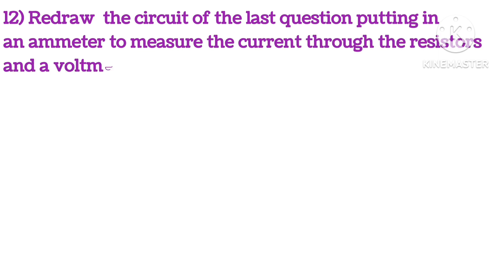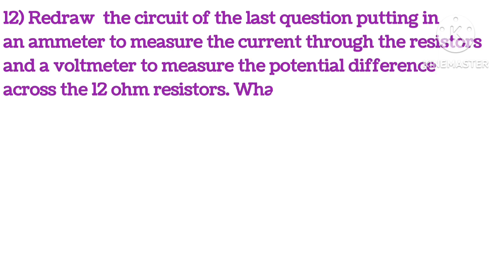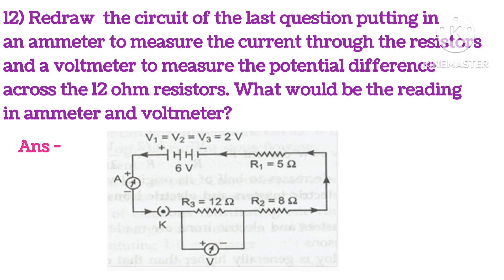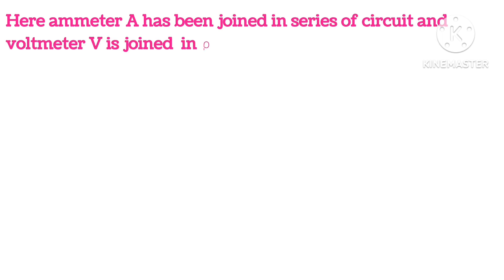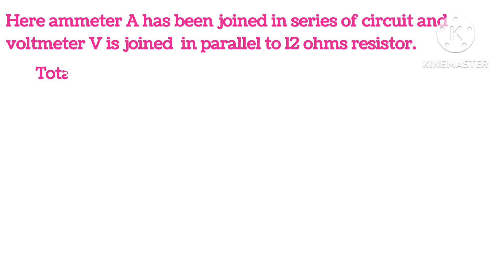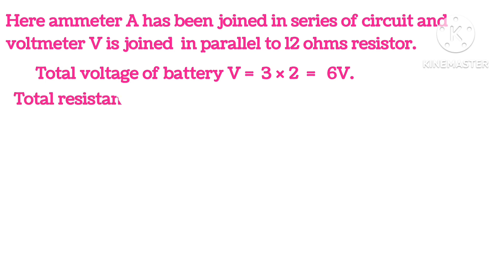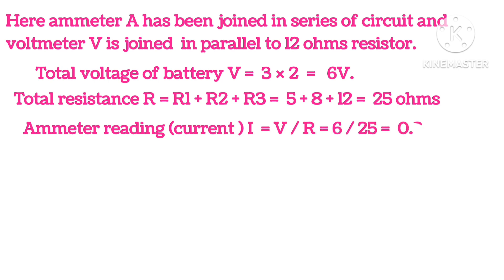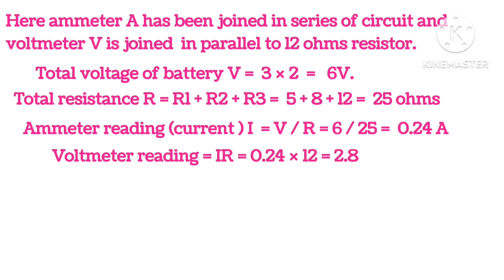Redraw the circuit putting an ammeter to measure the current through the resistors and a voltmeter to measure the potential difference across the 12-ohm resistor. What will be the readings? The ammeter A is joined in series and the voltmeter is joined parallel to the 12-ohm resistor. Total voltage V = 3 × 2 = 6 volts. Total resistance R1 + R2 + R3 = 25 ohms. Ammeter reading I = V/R = 0.24 ampere. Voltmeter reading V = IR = 2.88 volts.